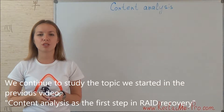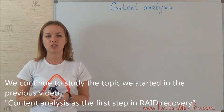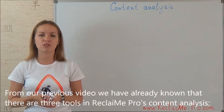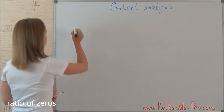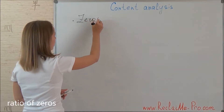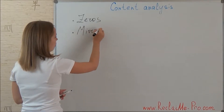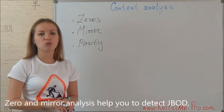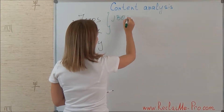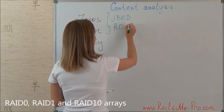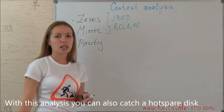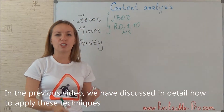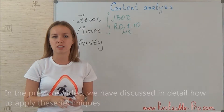Welcome to the Reclaim-me channel. Today we continue to study the topic we started in the previous video. Content analysis is the first step in RAID recovery. From our previous video we have already known that there are three tools in Reclaim-me Pro content analysis: the ratio of zeros, mirror analysis, and parity analysis. Zero and mirror analysis help you to detect RAID 0, RAID 1, and RAID 5, and with this analysis you can also catch a hot spare disk.